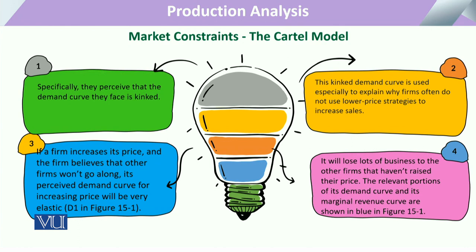Now, in this informal collusion, if we look at further situations, the result is this: because it is perception-based, one firm perceives that the demand curve it faces is not a straight line — rather it is kinked. The kink is the main feature. It is a downward kinked demand curve. In this informal collective group, the phenomenon of sticky prices is being followed.